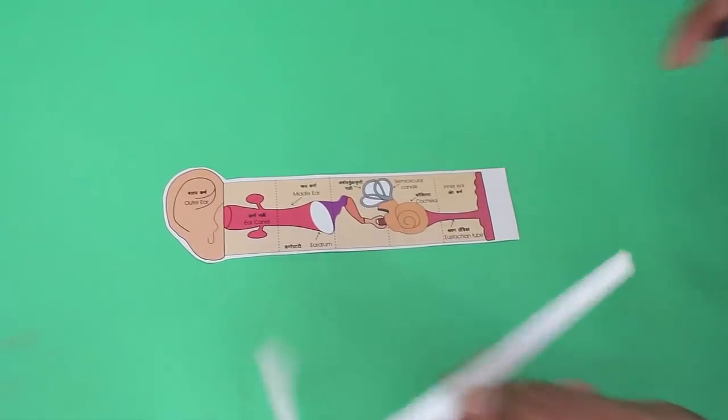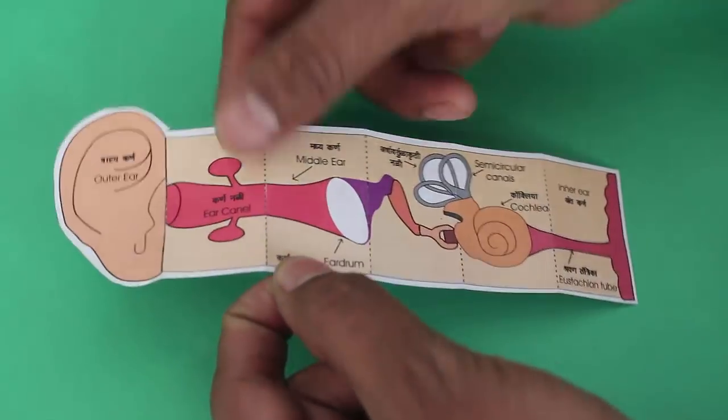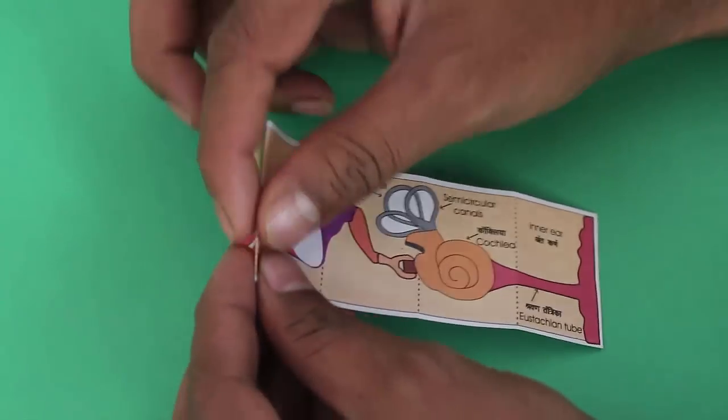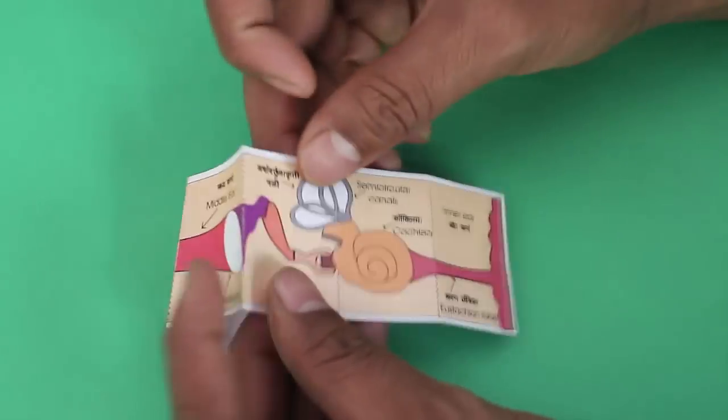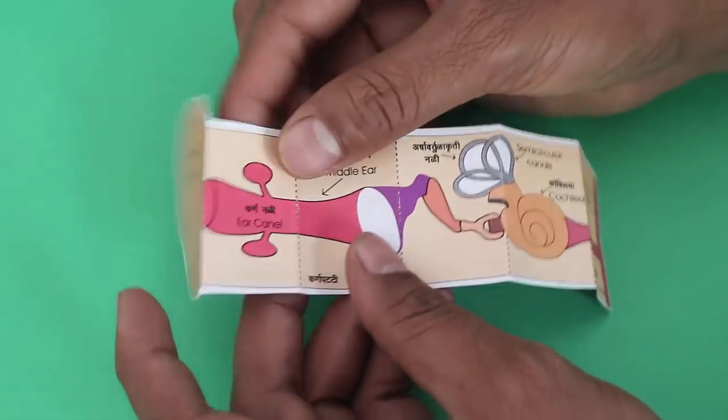This action moves the tiny chain of bones in the middle ear. The last bone in this chain knocks on the membrane window of the cochlea. The inner ear is shaped like a snail and therefore it is called a cochlea.